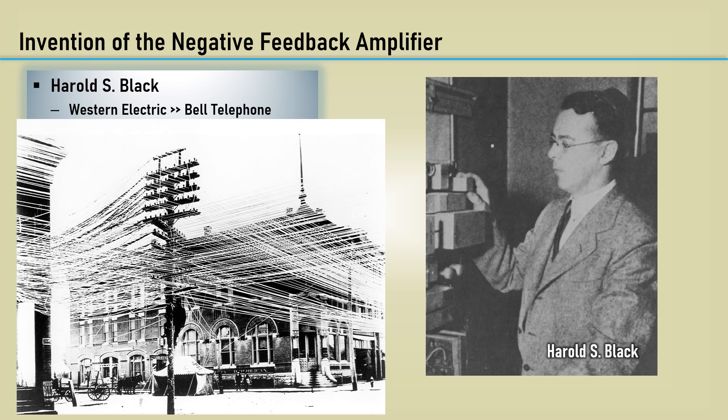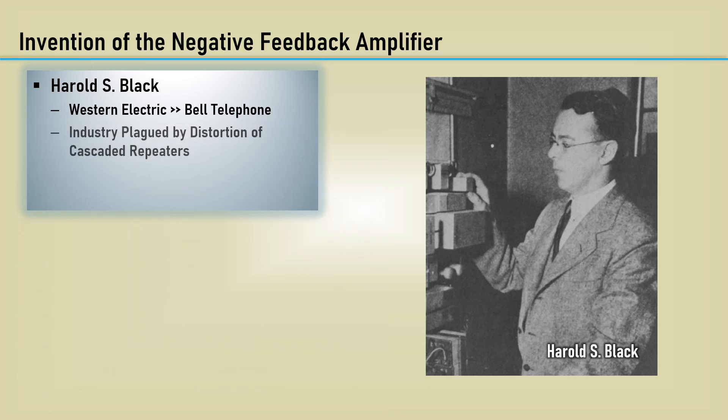Many repeater amplifiers had to be used in cascade to make up for the losses, typically every 25 miles. This left the industry plagued by distortion of cascaded repeaters. Vacuum tubes were all they had for amplifiers, and they are, of course, very nonlinear. Each successive cascaded stage added more nonlinearities.